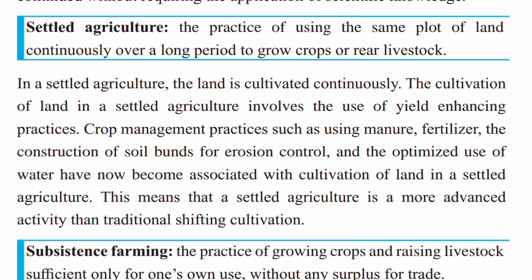Yield-enhancing activities include crop management practices such as using manure, fertilizer, and the construction of soil bonds for erosion control. The optimized use of water have now become associated with cultivation of land in settled agriculture.